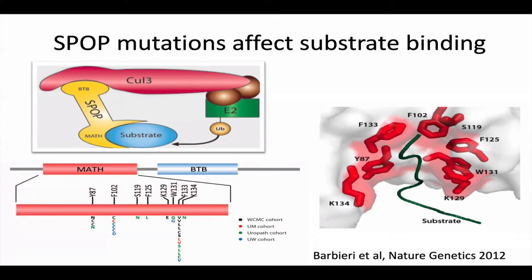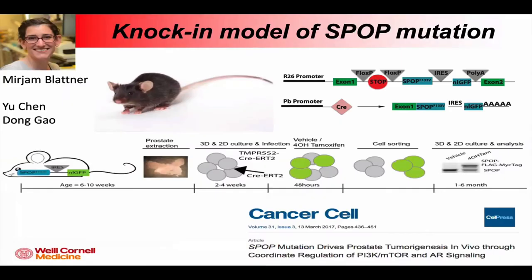Other interesting things about these mutations: they're all pretty much heterozygous, meaning the missense mutation and the wild-type allele are both expressed in the same tumors. And it appears these happen pretty early in the natural history of the disease. With that in mind, several years ago we developed a genetically engineered mouse model to study these mutations better — we knocked in the most common point mutations into the ROSA26 locus in a Cre-inducible manner and looked at prostate-specific effects, getting both in vivo models and in vitro mouse prostate organoids.